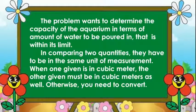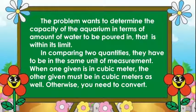The problem wants to determine the capacity of the aquarium in terms of amount of water to be poured in, that is, within its limit. In comparing two quantities, they have to be in the same unit of measurement. When one given is in cubic meters, the others must be in cubic meters too. Otherwise, you need to convert.